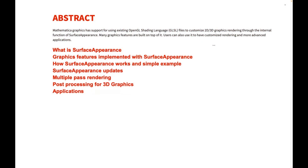You might wonder what is GLSL? GLSL is just OpenGL Shading Language, and it is a program that can be run on GPU directly if you're using OpenGL. We have an internal function called SurfaceAppearance — a graphics feature that allows you to customize 2D and 3D graphics rendering. There are many newly introduced graphics features building on top of it, mainly fillings and shadings, and even though it's an internal function, it is also accessible for users as well.